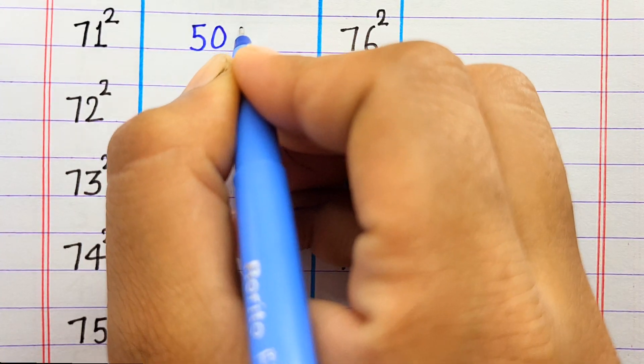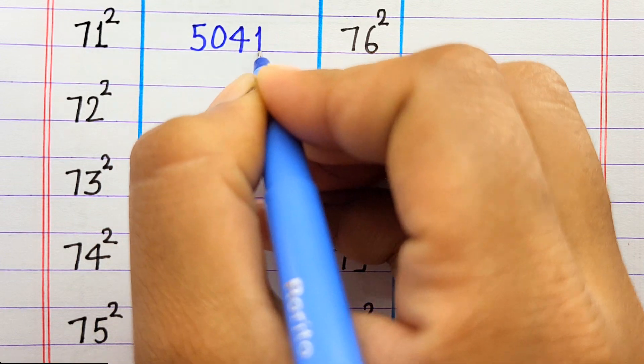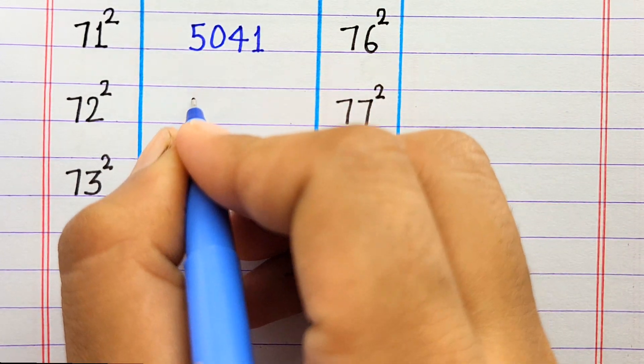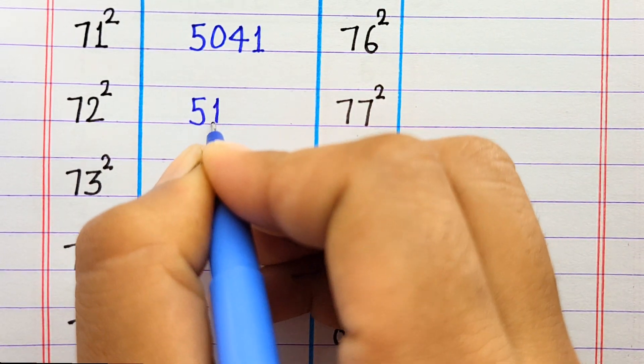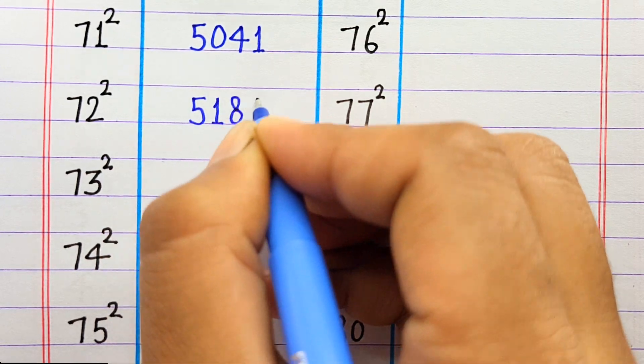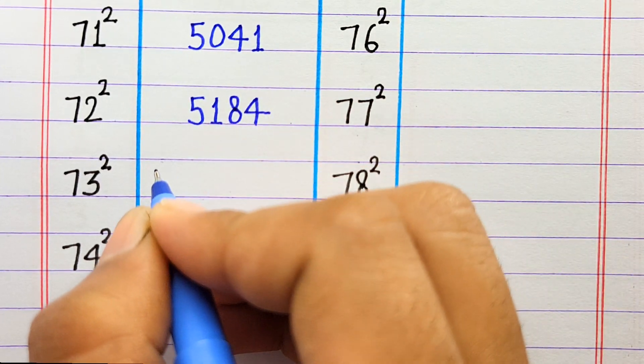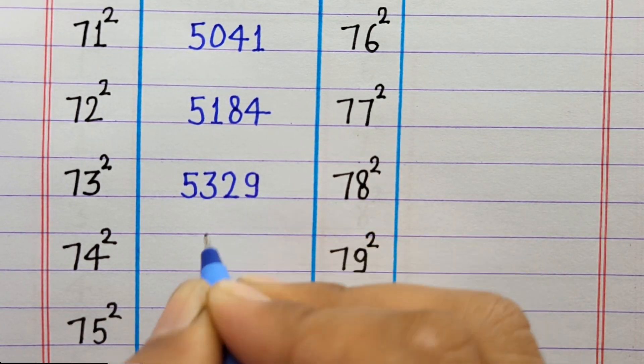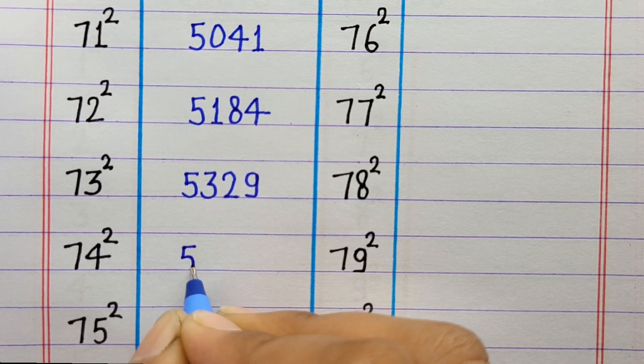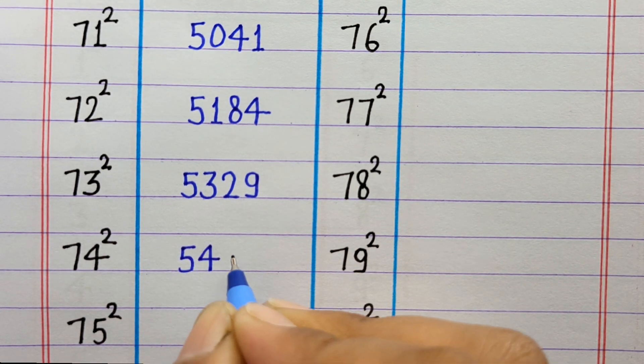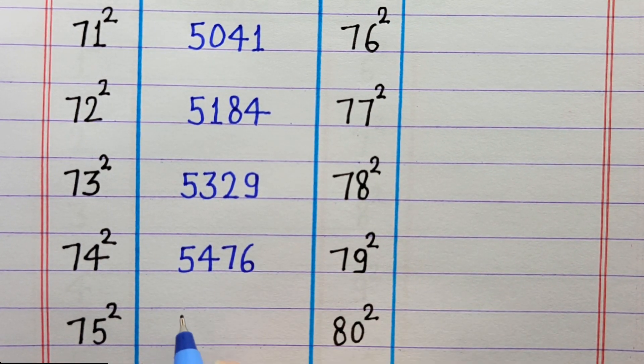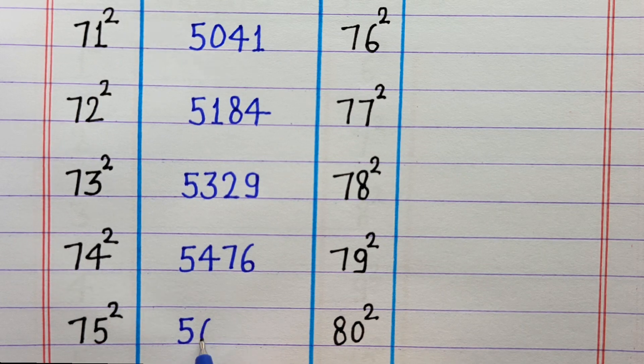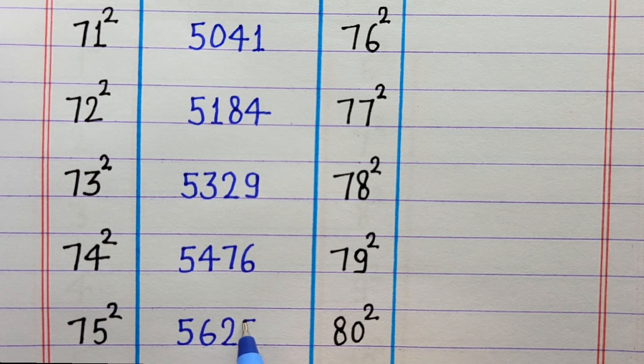71 ka square 5041, 72 ka square 5184, 73 ka square 5329, 74 ka square 5476, 75 ka square 5625.